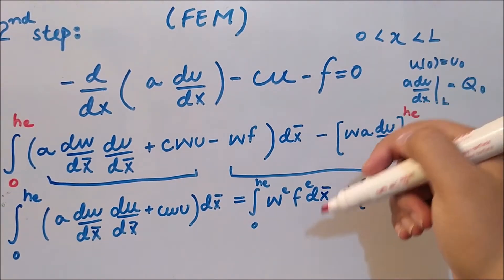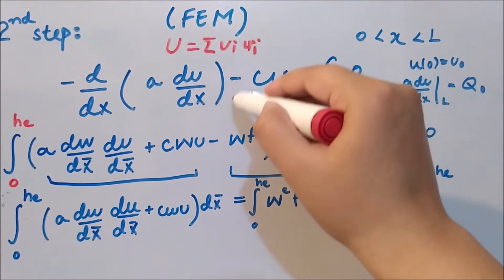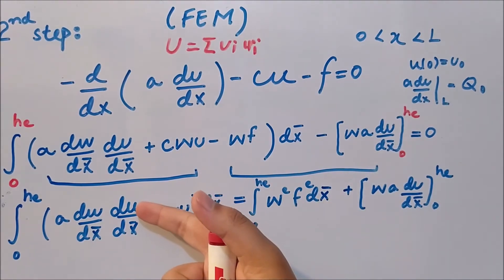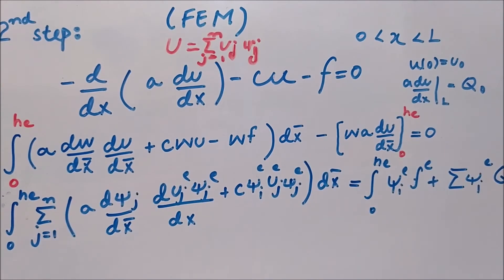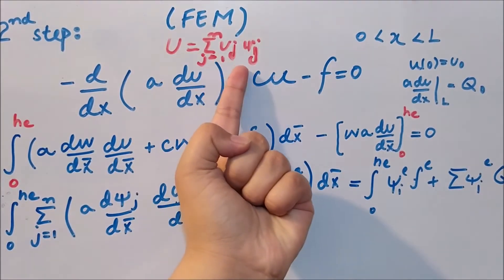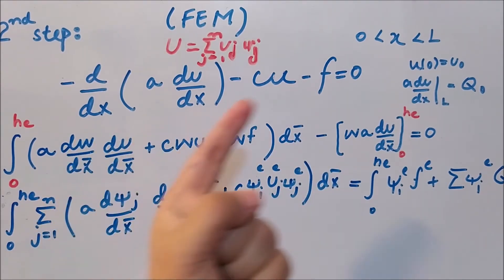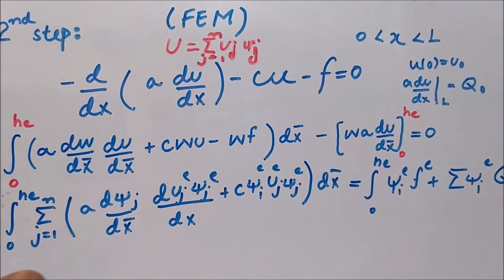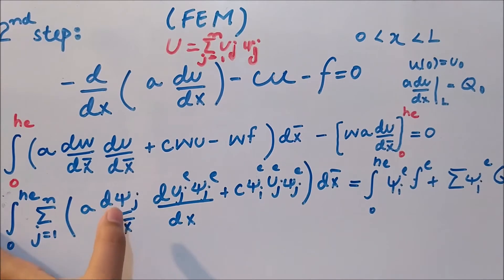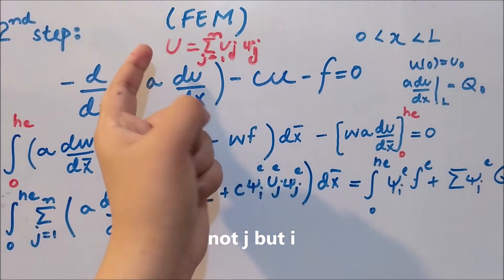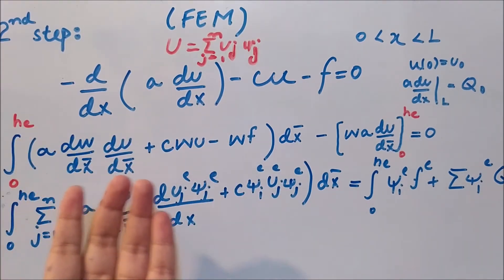We now recall the approximation function u, which is the summation of u_i times psi_i. Because we are approximating the differential equation, we replace the actual u with the summation of u_j times psi_j. Since our equation has w rather than psi, we approximate w with the same psi used as the shape function. The derivative of w with respect to x becomes d(psi_j)/dx. The index j runs from 1 to n, representing the number of nodes per element — whether linear, quadratic, or otherwise.